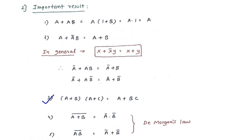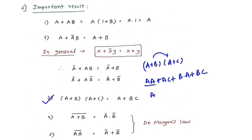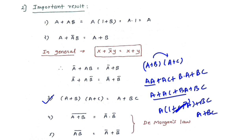Point three: (A+B)(A+C) = A + BC. Expanding: A·A + A·C + B·A + B·C = A + AC + AB + BC. Taking A common gives A(1 + C + B) + BC = A + BC. Point four and five are De Morgan's laws: (A+B)̄ = Ā·B̄, and (A·B)̄ = Ā + B̄.